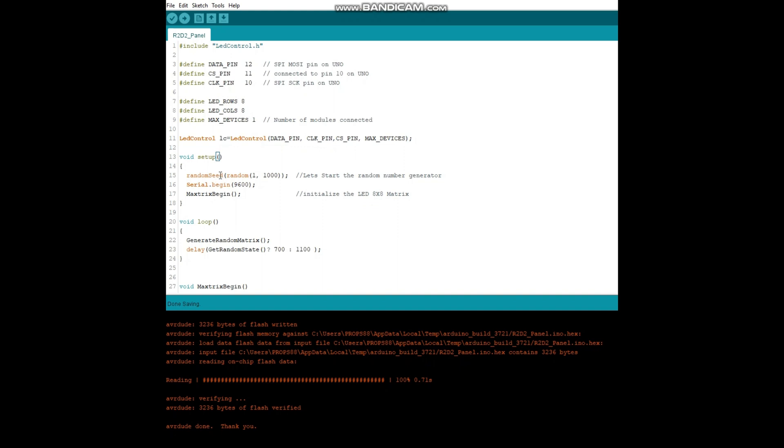And then in our setup very simple. We do the random seed. We initialize the random seed generator. We do our Arduino housekeeping here with the serial begin. And in the matrix begin this is where we initialize our LED matrix.